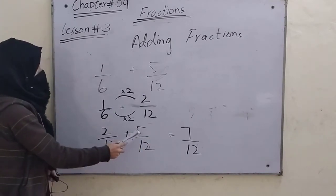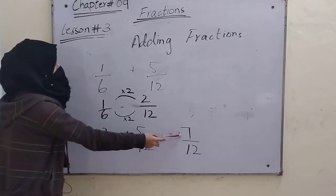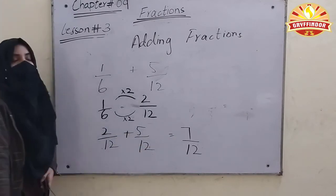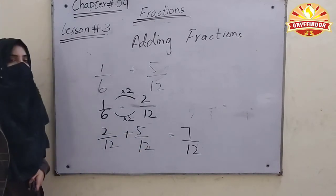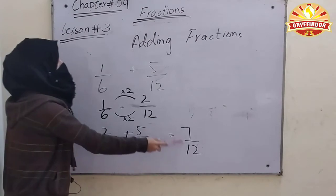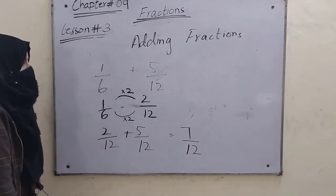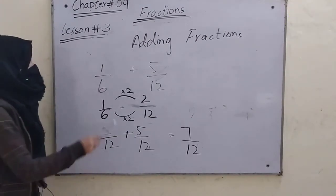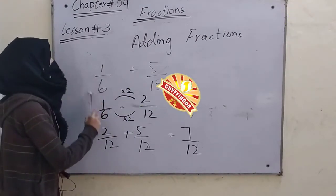We have to add 2 plus 5 by 12. So, 4 by 12 and 5 by 12 we have to add 8.